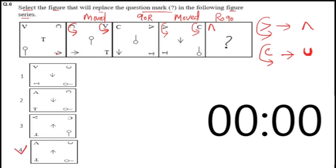And if you want to check out the other three lower symbols, you can see that from the first figure to the second, they interchanged their position. T comes in the place of the arrow, the arrow comes in the place of this symbol, and this symbol comes in the place of T — so they rotated and interchanged their position. In the second figure to the third figure, the middle symbol rotated 190 degrees, and T rotated 90 degrees clockwise, and the arrow rotated 90 degrees clockwise.